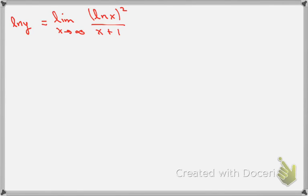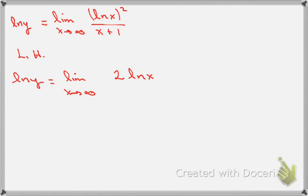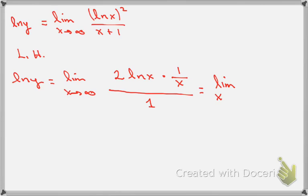Applying L'Hôpital's Rule again: the natural log of y equals the limit as x goes to infinity. The derivative of the top, (ln x)², is 2·ln x · (1/x) by the chain rule. The derivative of x+1 on the bottom is just 1. After simplification, we get the limit as x goes to infinity of 2/(x · ln x), which is the same as 2·ln x / x.